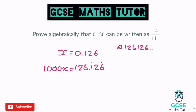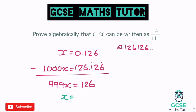We take these away from each other and there won't be any decimals involved. We get 1,000 take away 1x, which is 999x. And 126.126 take away 0.126 just leaves us with 126. There we go — no decimals. Turning that into a fraction straight away: divide by 999, we get 126 over 999.